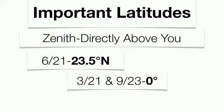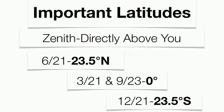On March 21st and September 23rd — the two equinoxes — the sun is going to be at the zenith at the equator, 90 degrees above, producing the greatest angle of insolation. During the winter solstice on December 21st, that is the southern hemisphere's summertime, so 23.5 degrees south — the Tropic of Capricorn — is going to have the most direct sun, with the sun at the zenith on that day.